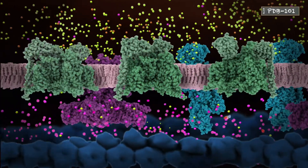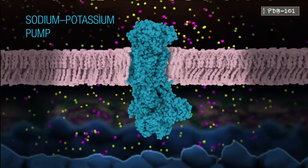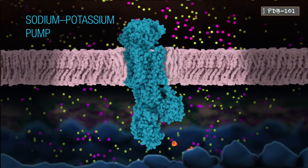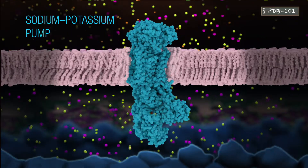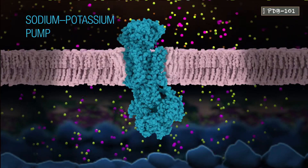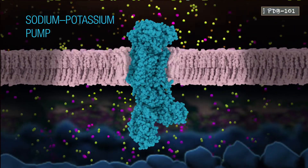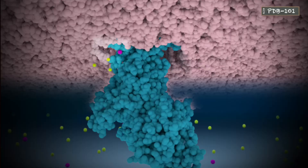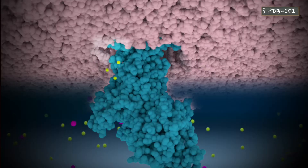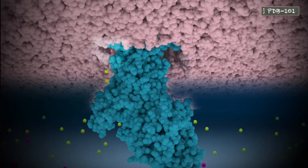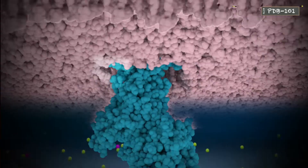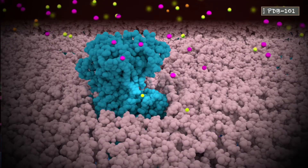Neurons establish and maintain these gradients largely by the sodium-potassium pump, a membrane protein that pumps three sodium ions out of the neuron for every two potassium ions that it pumps in.